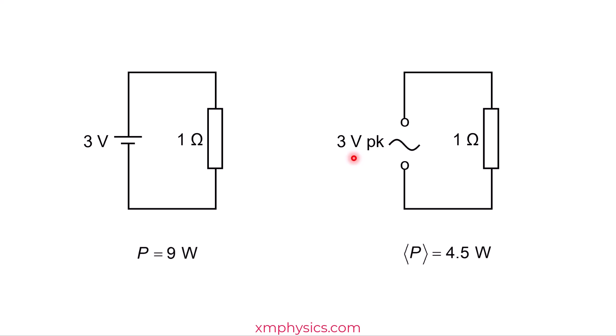For example, an AC power supply with 3 volts peak voltage gives you only half the average power dissipation compared to a DC 3 volts power supply. So these 3 volts here kind of gives us a wrong idea of how much power this AC power supply can provide, right?